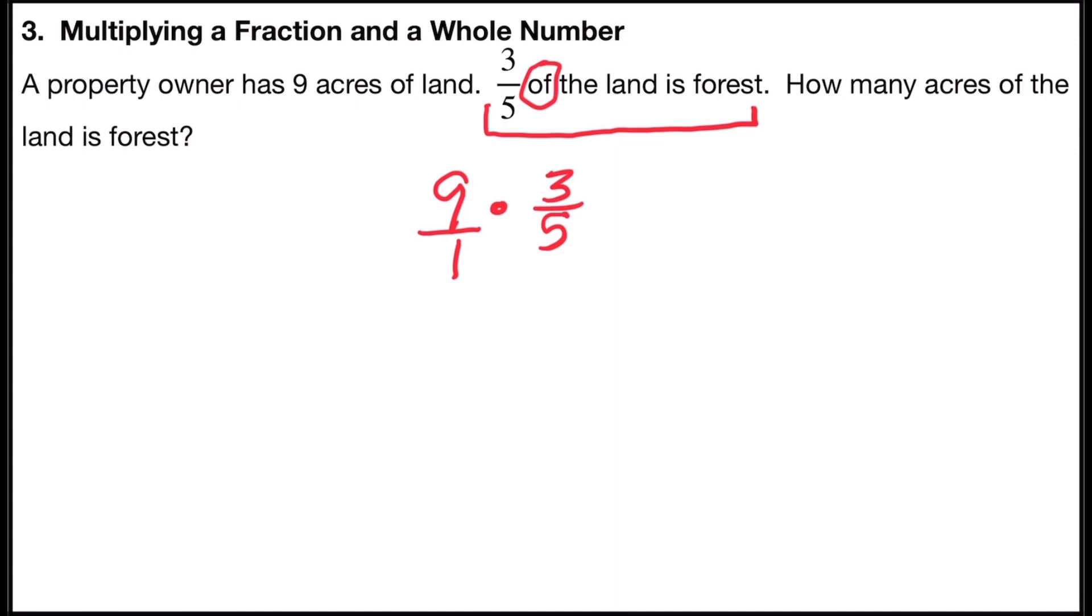Nine times three, multiply across the top, is 27. And one times five, multiplying across the bottom, is five. And I get 27 fifths, which is an improper fraction.